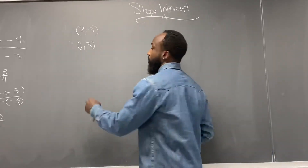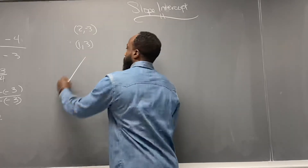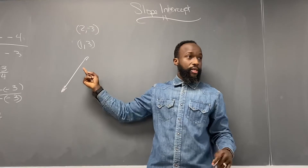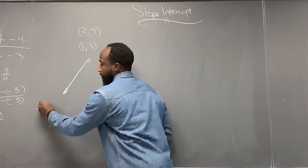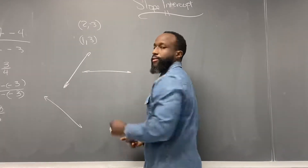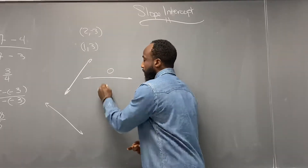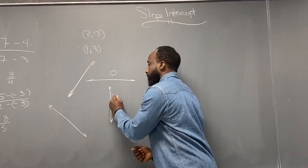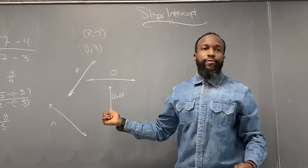So yesterday we talked about the four different types of slopes. If the line is going from left to right up, this is a positive slope. If it's going down from left to right, it's negative. If it's a horizontal line — zero — it has no rise, all run. That is a zero slope. And then you have all rise and no run — that is an undefined slope. So: positive, negative, zero, undefined.